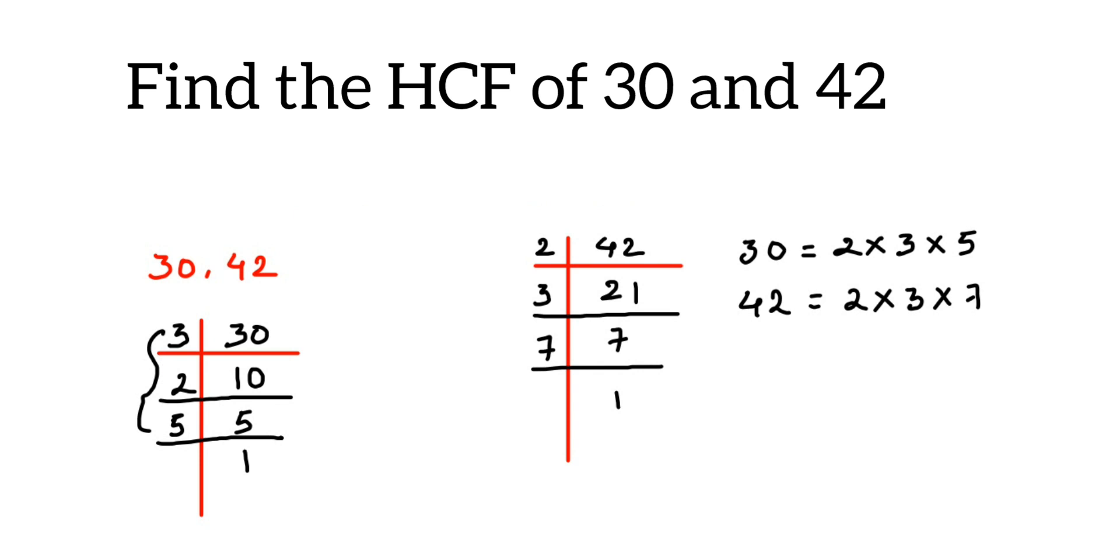For 2, I got one 2 from here and one from there - one pair. For 3, we got one pair. For 5 and 7, there is no pairing; we cannot find a common factor for them. So the HCF will be from each pair, you take one factor.